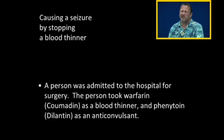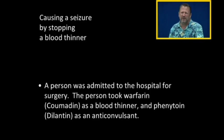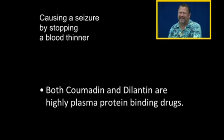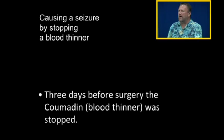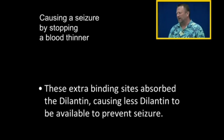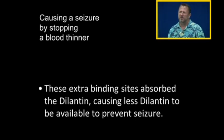Here we're going to cause a seizure by stopping a blood thinner. A person is admitted to the hospital for surgery. They take Warfarin (Coumadin), a blood thinner, and also phenytoin (Dilantin) as an anticonvulsant to prevent seizures — likely because they have atrial fibrillation. Both Coumadin and Dilantin are highly plasma protein binding drugs. Three days before surgery, the Coumadin is stopped because we don't want them on a blood thinner during surgery. But the Coumadin is protein bound, and by stopping it, protein binding sites become available for Dilantin. These extra binding sites absorb Dilantin from its free state to a bound state, causing less Dilantin to be available to prevent seizures.